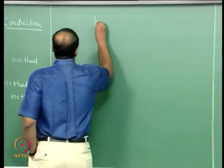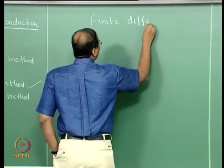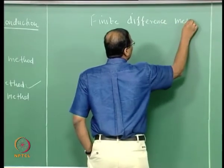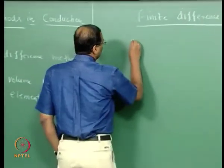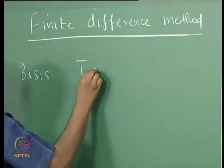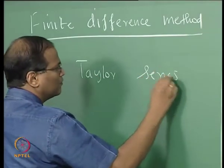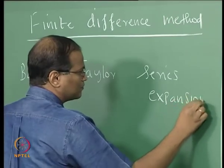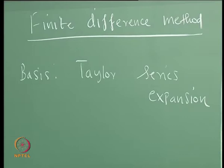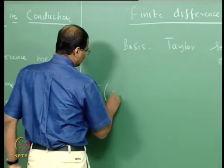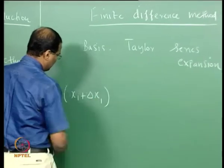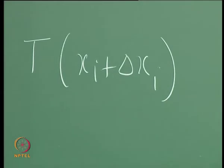For the finite difference method, what is the basis? The basis is the Taylor series expansion. Let T be the temperature — I want to use T instead of y, because T is frequently used in conduction and x is the spatial coordinate. T is a function of x. For simplicity, we say T is a function of x_i. Using the Taylor series, we expand T at x_i as T(x_i) plus (dT/dx) at x_i times delta x_i, plus higher order terms.